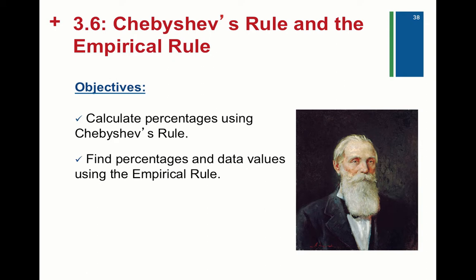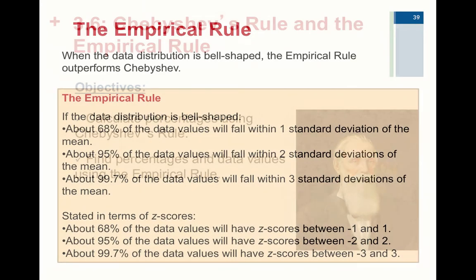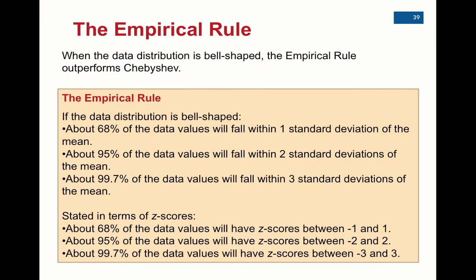Section 3.6 is titled Chebyshev's Rule and the Empirical Rule, but I'm only actually going to talk about the Empirical Rule because the Empirical Rule applies to bell-shaped data sets, which are extremely popular in the real world and in this Intro to Stat course. So we're going to skip Chebyshev's Rule. You can skip that part of the reading if you check out the reading.